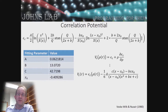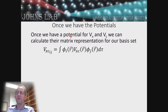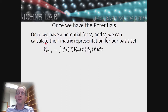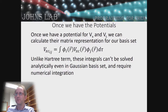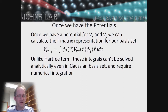Once we have the exchange and correlation potentials, we calculate their matrix representation in our basis set. The ij matrix element is the integral over all space of basis function i times the exchange-correlation potential at each point times basis function j d-tau — using all real basis functions, so no complex conjugate is needed.